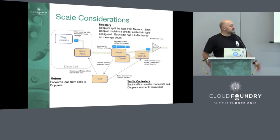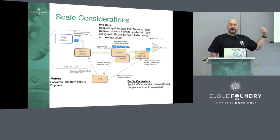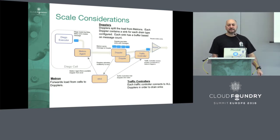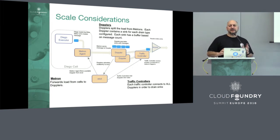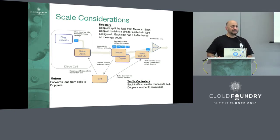There are really three areas you have an option to tune when it comes to LoggerGator: the Metron agents themselves, which forward load off of the Diego cells into Doppler; the Dopplers — how many you have; and lastly, the traffic controllers. The key piece at a high level is to look at the Dopplers — these are right in the middle of LoggerGator. They're doing two different tasks: receiving information inbound from your Diego cells and moving things out.